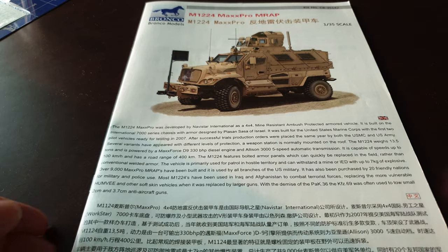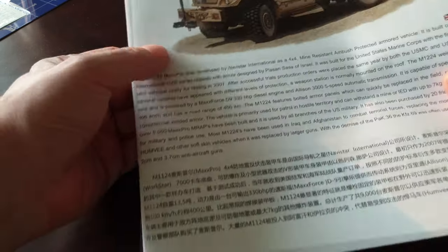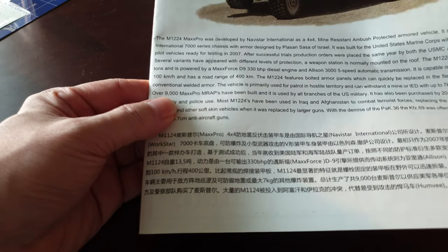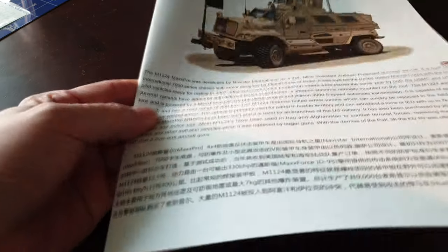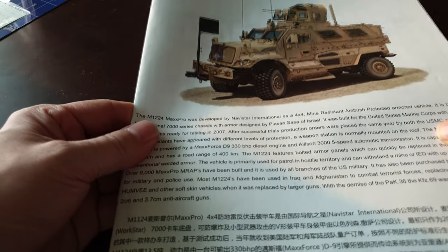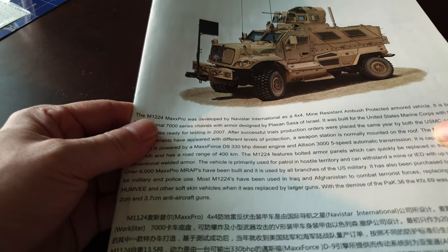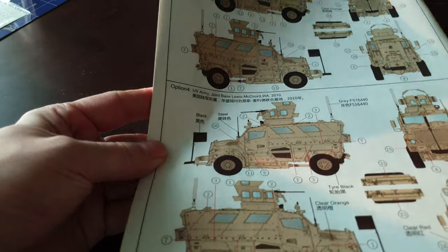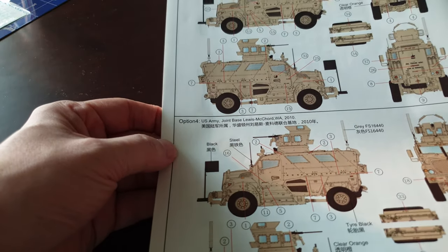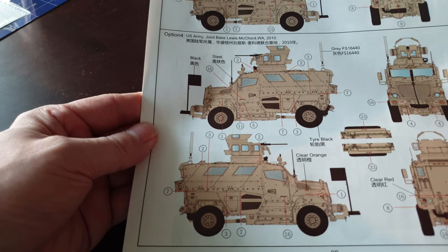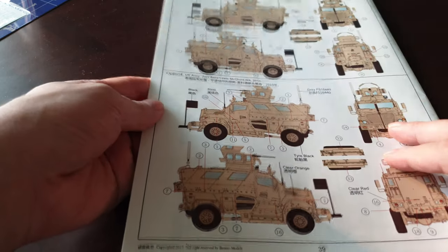We're going to start off looking at the instructions. It's in a booklet, there's a bit of history. Basically this is a V-shaped hull vehicle, mine resistant, developed in the recent conflicts Iraq and Afghanistan where conventional vehicles were not mine protected. So they had to develop these V-shaped hull vehicles to deal with the insurgents and IED threat.